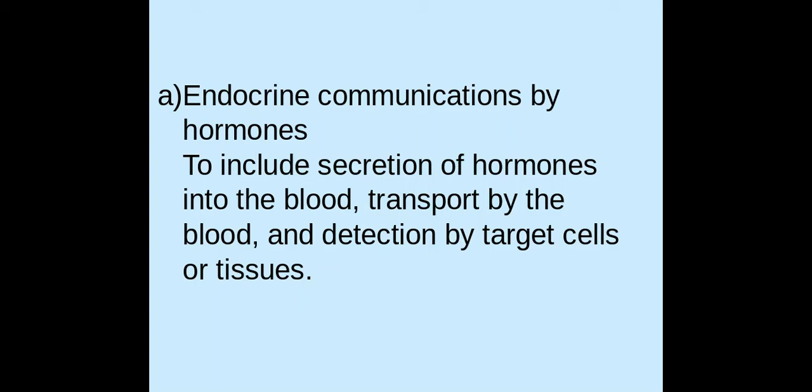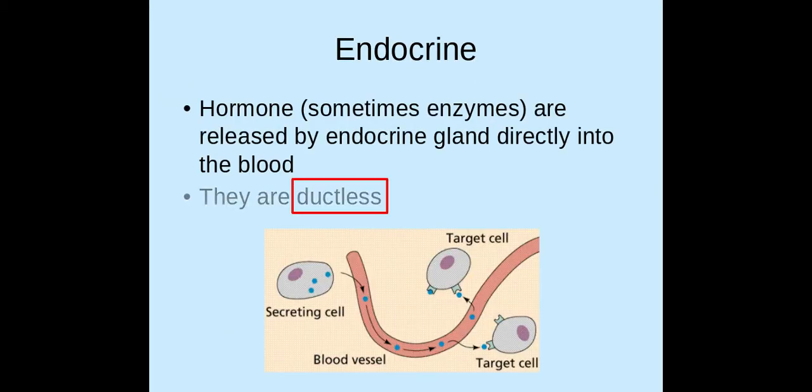Welcome biologists to this session. We're going to be taking a look at what endocrine communication is and how hormones are transported around the body and how they impact upon cells. Endocrine refers to a tissue or an organ that secretes hormones — sometimes enzymes — directly into the blood. They do not have any ducts, or they don't use ducts in endocrine communication.